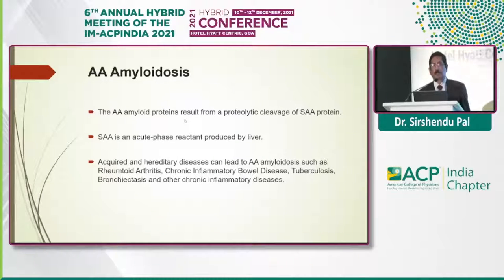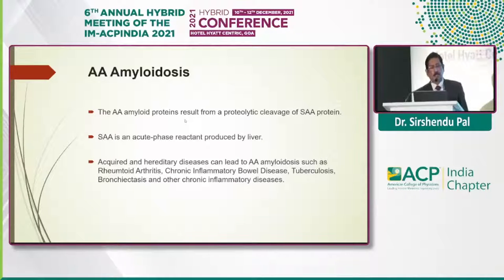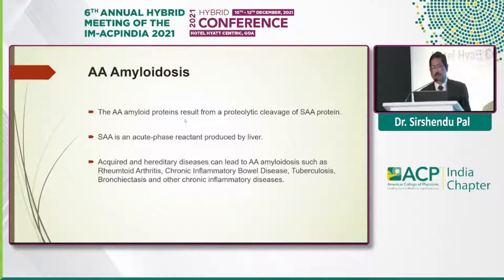The commonest amyloidosis in India is AA amyloidosis. These amyloid proteins result from proteolytic cleavage of the SAA protein, and SAA is an acute-phase reactant produced by the liver. Acquired and hereditary diseases can lead to amyloidosis. The commonest diseases leading to this are rheumatoid arthritis, chronic inflammatory bowel disease, tuberculosis, and bronchiectasis.